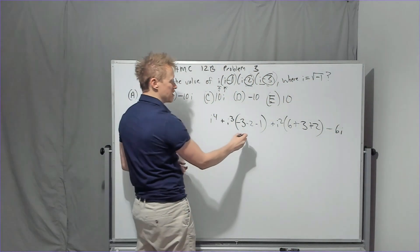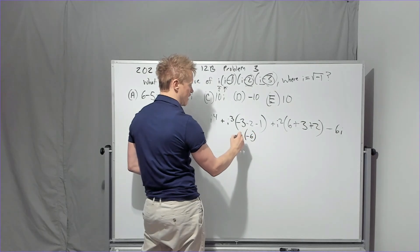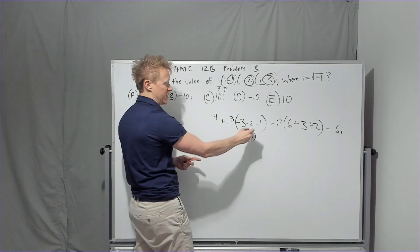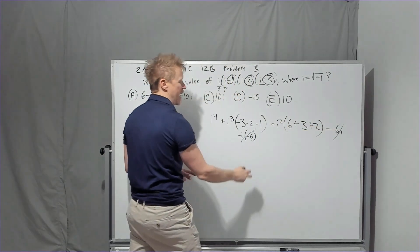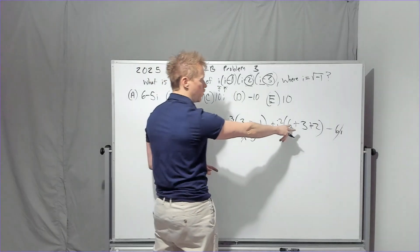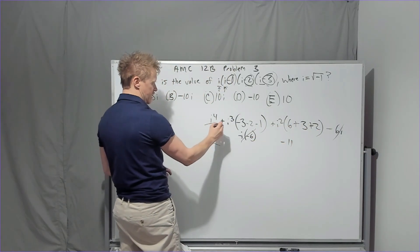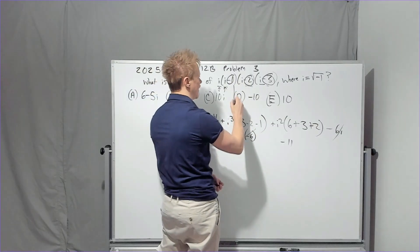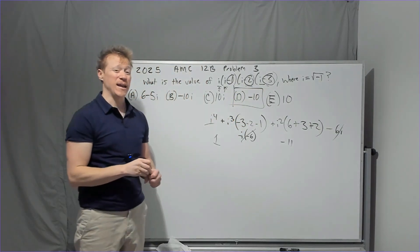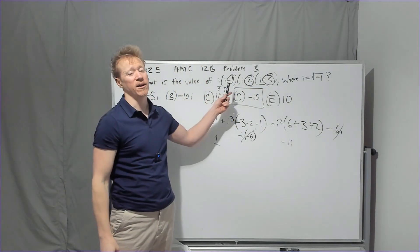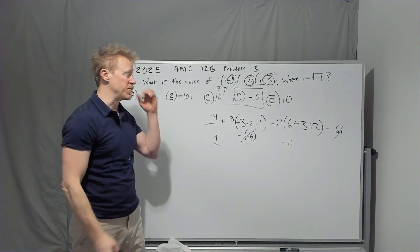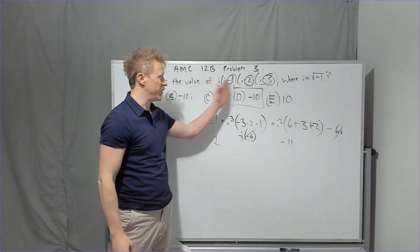So now, what is i cubed? It is negative i. So I will have negative six times negative i. That's positive six i. It's going to cancel that. i squared is negative one. I've got 11. It's minus 11. This is positive one. One minus 11, negative 10.